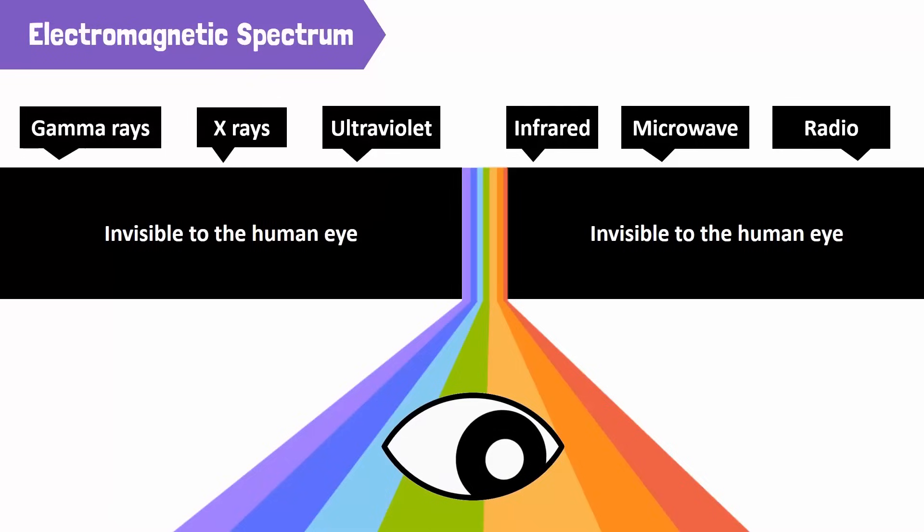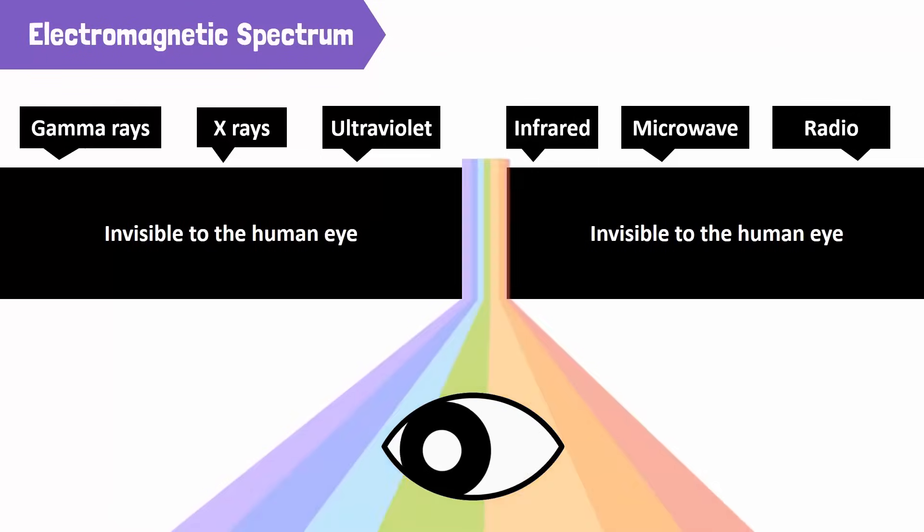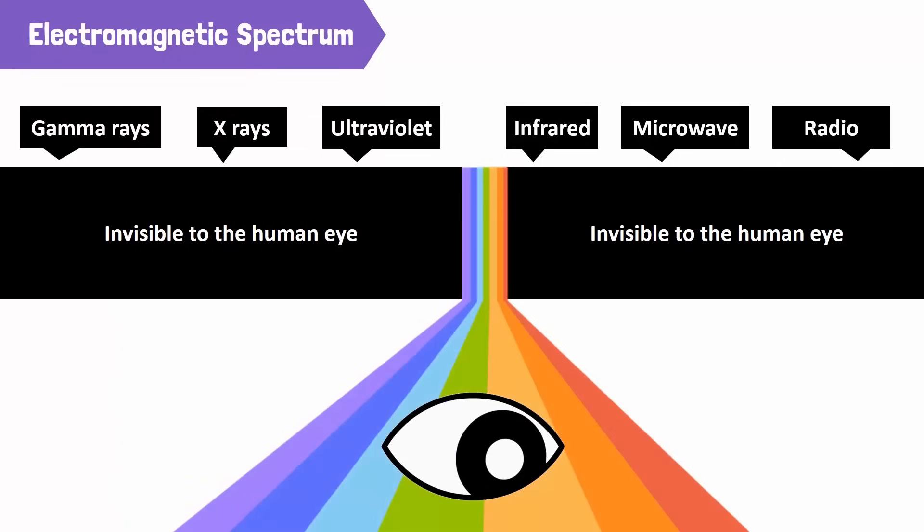Together with visible light, all these types of radiation are called the electromagnetic spectrum. Visible light makes up only a tiny part of the electromagnetic spectrum but includes every color we can see.